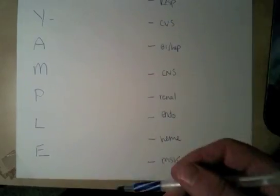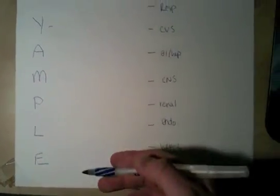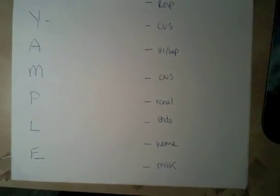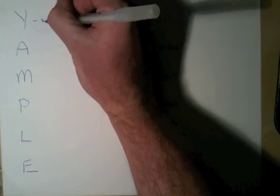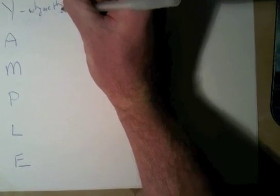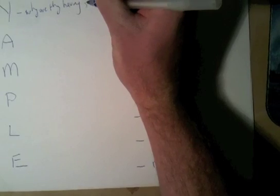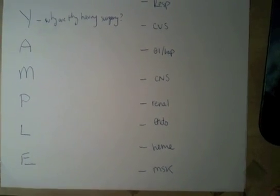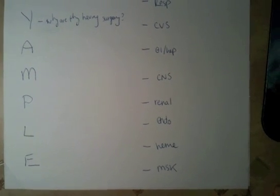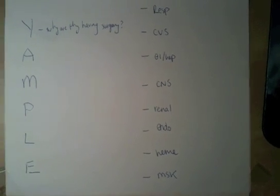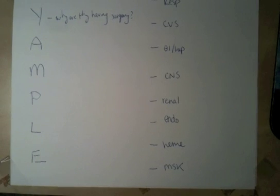So the mnemonic is WHY AMPLE, and we'll go through it kind of one by one. The first question — 'W' — is why are they having the surgery in the first place? That should just be part of your natural curiosity in being in medicine. If someone's having an operation, you want to know why, and you can use this curiosity to help guide your history a little bit further.